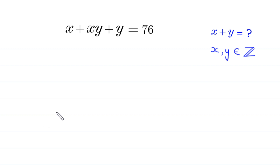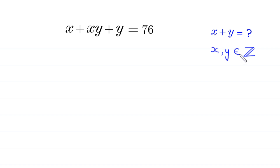Hello, welcome to Horosol. We have this algebra equation: x plus xy plus y is equal to 76. We need to find all possible values of x plus y, where x and y are integers.